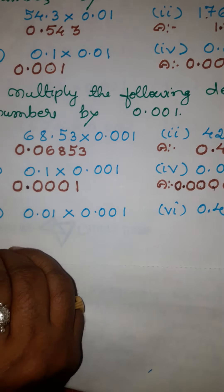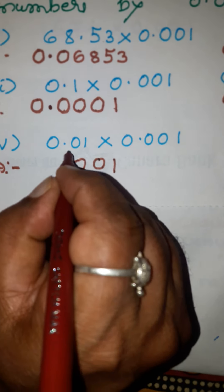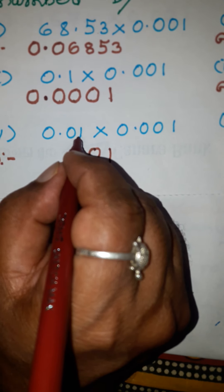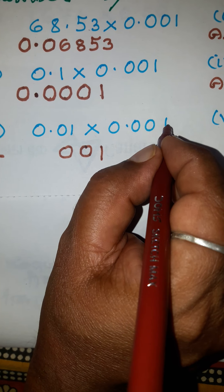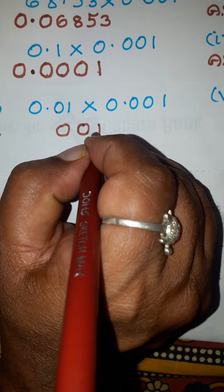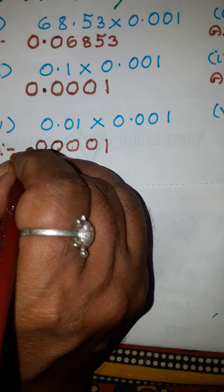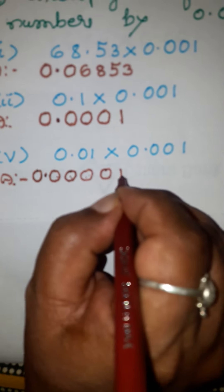Fifth problem: write this number without a decimal point as 001. After the decimal to the right there are two places; here after the decimal to the right there are three places. Three plus two is five. But here there are only three digits, so make this a five-digit number by inserting two zeros. Move five places — one, two, three, four, five — and put the decimal point. It is customary to put a zero here. The answer is 0.000001.